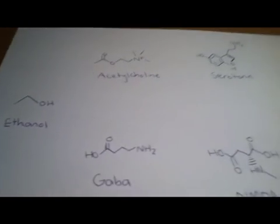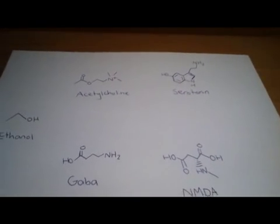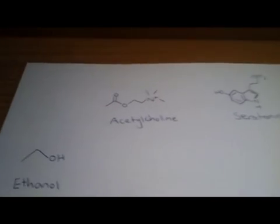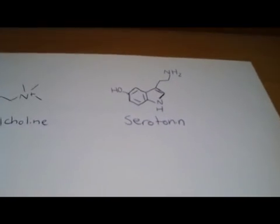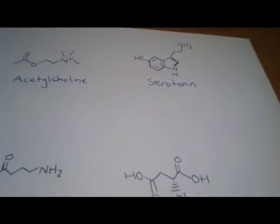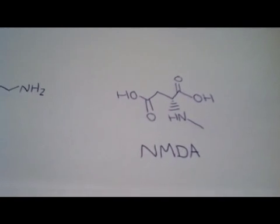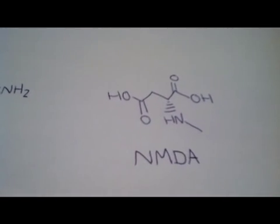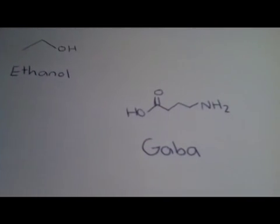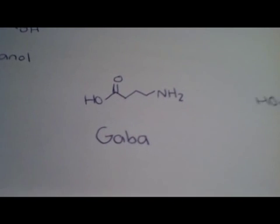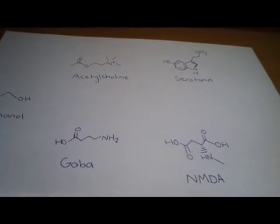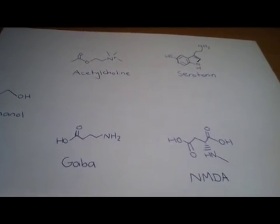Ethanol basically binds to acetylcholine, it binds to serotonin which affects mood levels, it binds to NMDA or N-methyl-D-aspartic acid, and it binds to GABA, also known as gamma-aminobutyric acid. So they're the neurotransmitters that alcohol binds to. There's also two more.